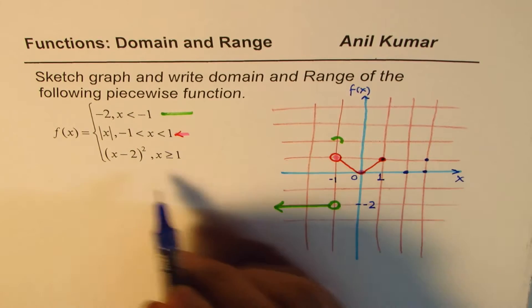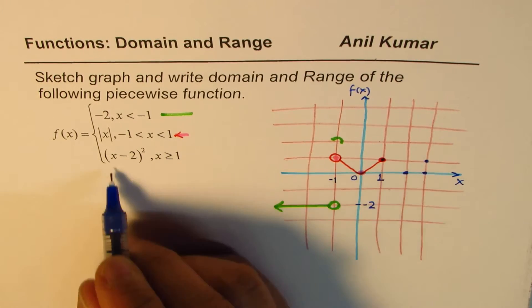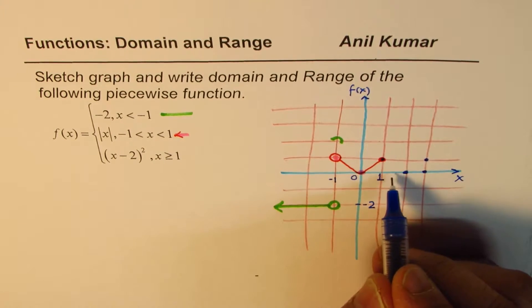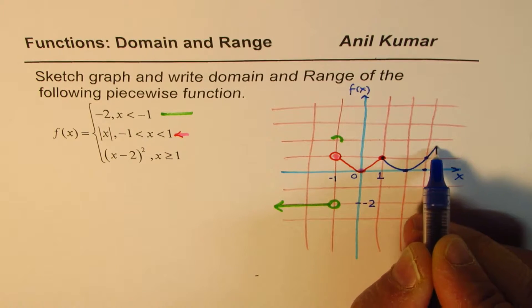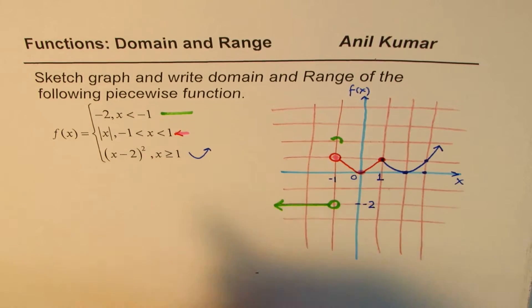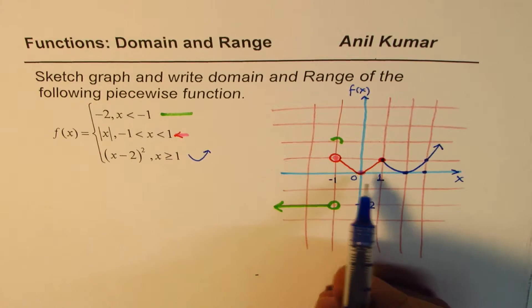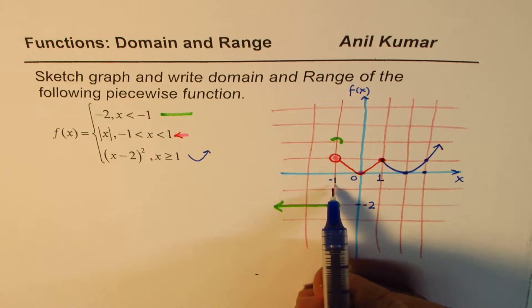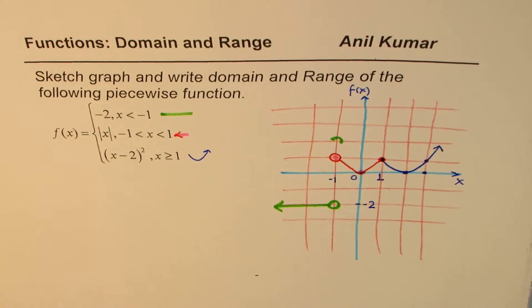So what you notice here is this is a parabola which opens upwards with vertex at 2. So the graph of this function will be kind of like this. So that is how this graph is going to be. So this I have drawn like this, the third piece. Now you can notice that it is discontinuous at minus 1. After that, it is continuous.